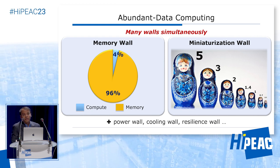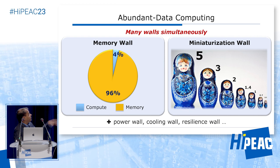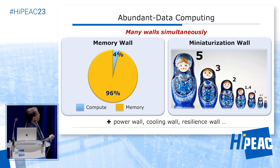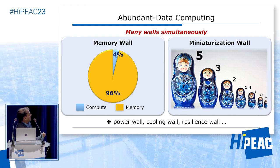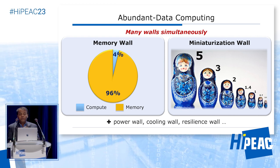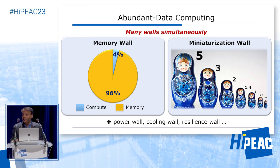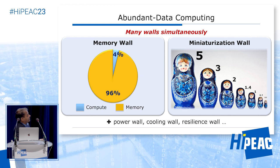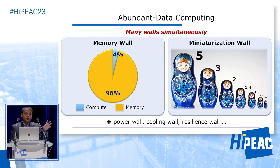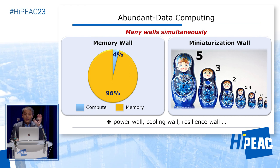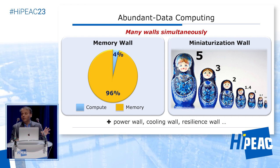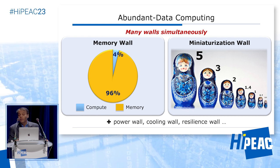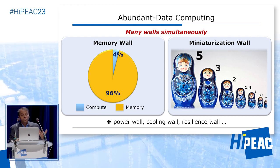At the same time, we are going to hit the miniaturization wall very soon. Looking at the Russian dolls drawn here — the 5 nanometer, 3 nanometer, 2 nanometer and so on — they are all scaled by 0.7. The question is, how far are we going to go in the next 10 years? This combination of the memory wall and the miniaturization wall is a deadly combination that creates many other walls, such as the power wall, the cooling wall, the resilience wall, and so on.